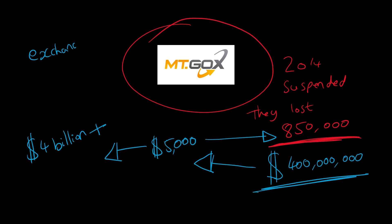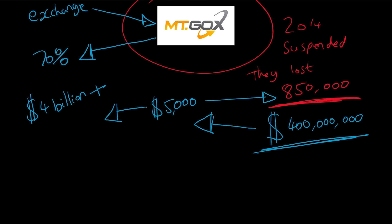Mt. Gox at its height was handling over 70% of the bitcoins on the market. It definitely had a monopoly and it lost all of it.